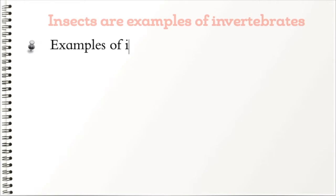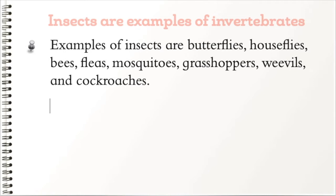Insects are examples of invertebrates. Examples of insects are butterflies, houseflies, bees, fleas, mosquitoes, grasshoppers, weevils, and cockroaches.